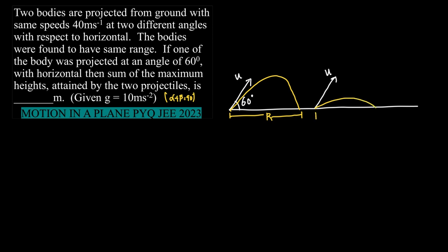Another is also projected at some angle theta such that the horizontal range is the same. Now what can vary here? This is the maximum height attained by projectile 1 and this is the maximum height attained by projectile 2. So u is same for both 1 and 2, range is also same for both 1 and 2.